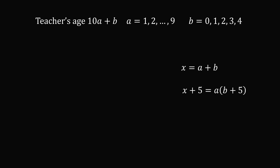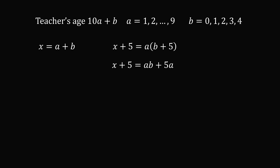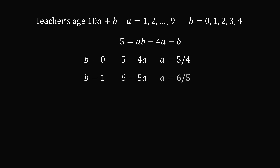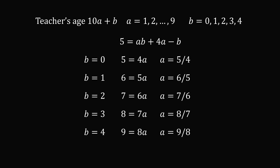Let's look at these equations. Multiplying through on the right-hand side: x plus 5 is equal to ab plus 5a. Then substituting x equals a plus b, we simplify to get 5 equals ab plus 4a minus b. There are only five cases to consider for b: 0, 1, 2, 3, or 4. If b equals 0, the equation gives 5 equals 4a, so a equals 5/4. If b equals 1, we get a equals 6/5. If b equals 2, a equals 7/6, and so on. All values of a are fractions, not whole numbers, so there are no integer solutions here. This entire case yields no solution.